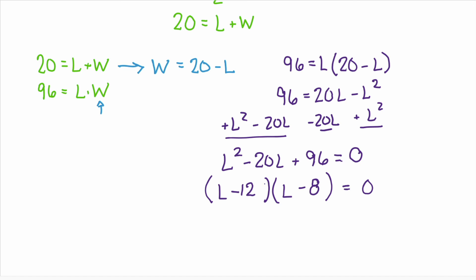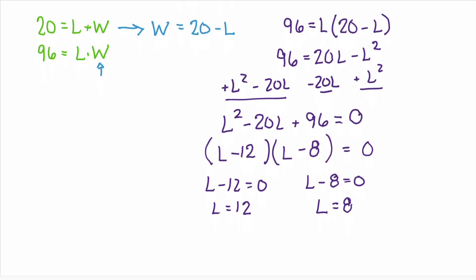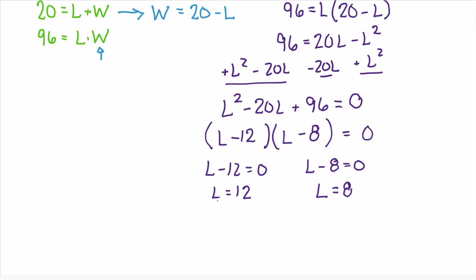Now you use the zero product property. l minus 12 equals 0 and l minus 8 equals 0. Add 12 to both sides. The first option is the length equals 12 and the second is the length equals 8. They both work. So if our length equals 12 feet then our width is equal to 20 minus 12 or 8 feet. So our rug is going to be 12 feet by 8 feet.